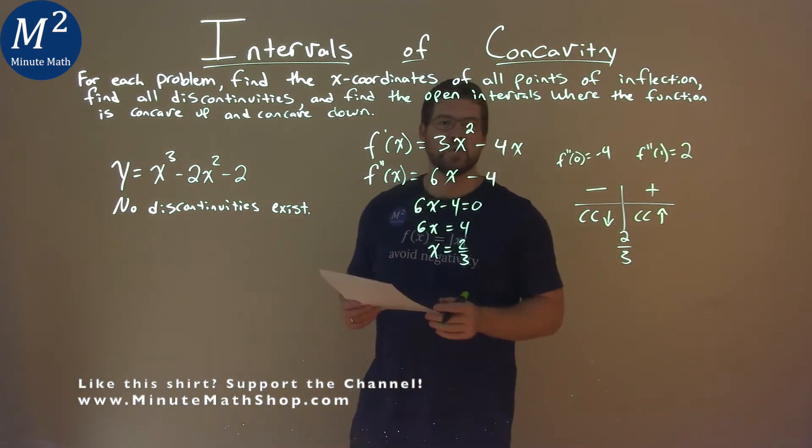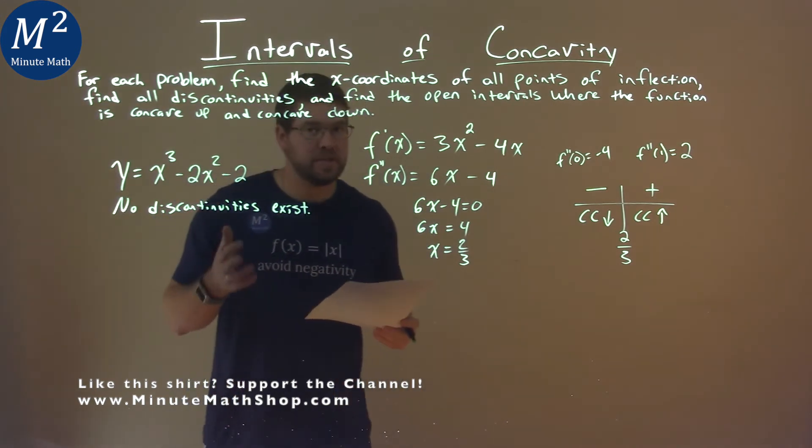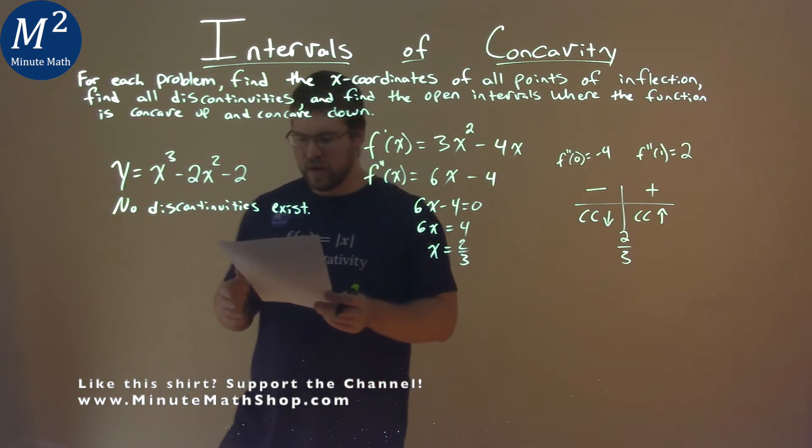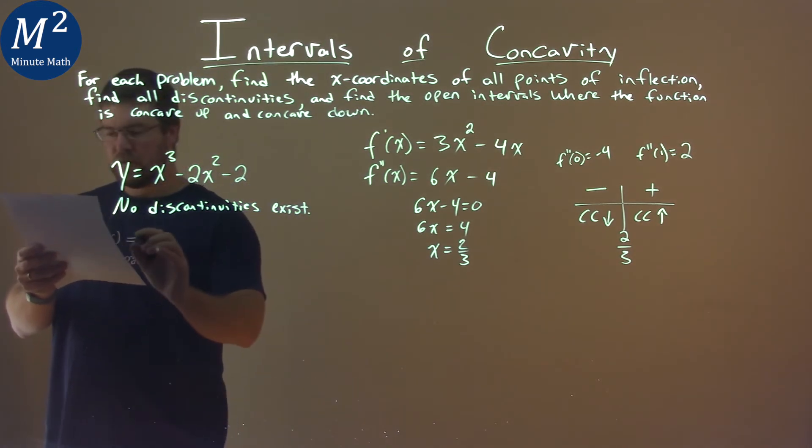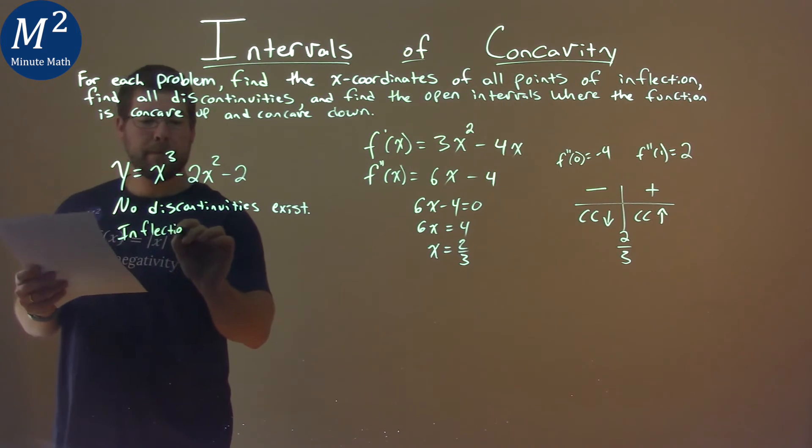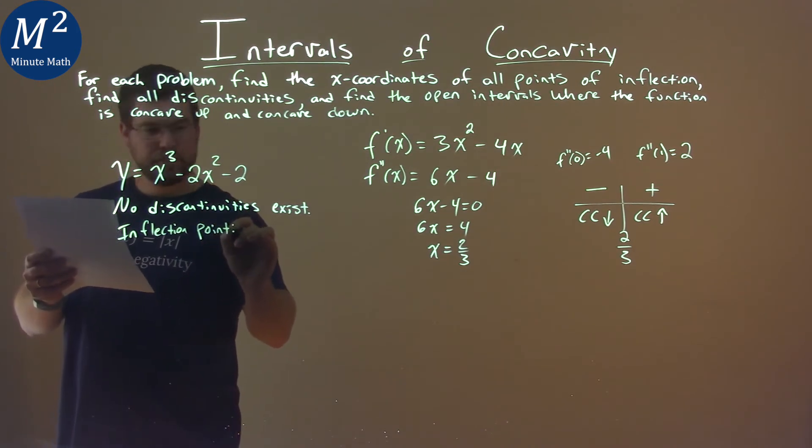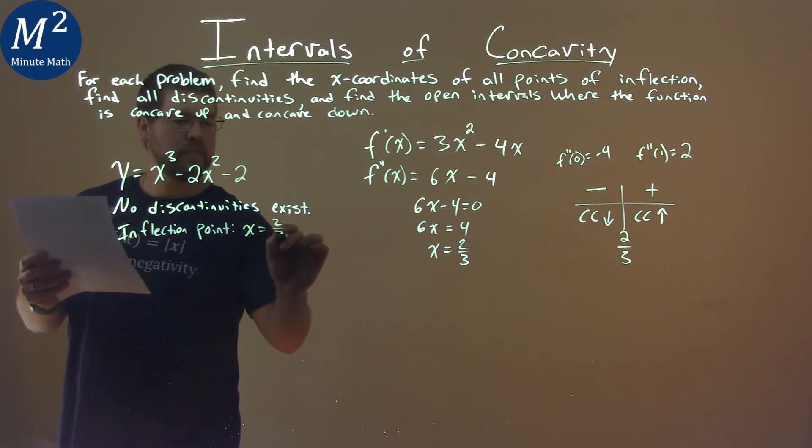That's the second derivative test. Now we have all the information we need to answer this problem. Our point of inflection, where we change concavity, is 2/3. So inflection point: x = 2/3.